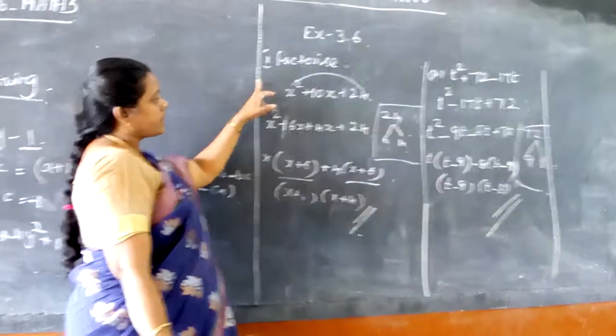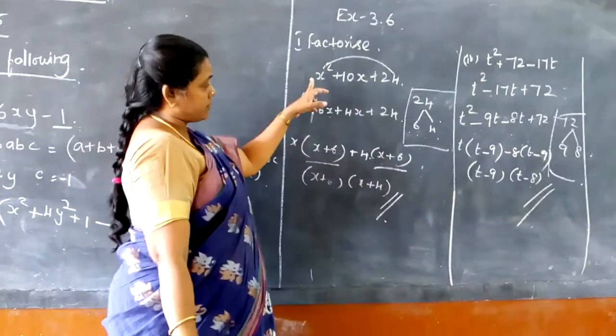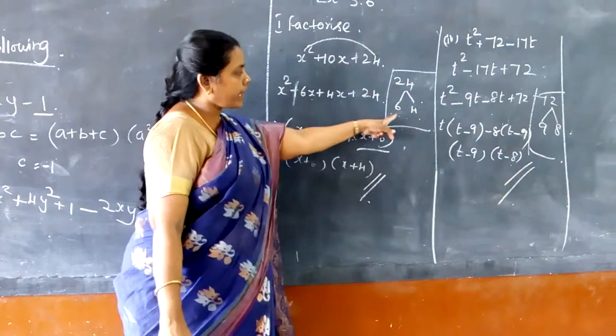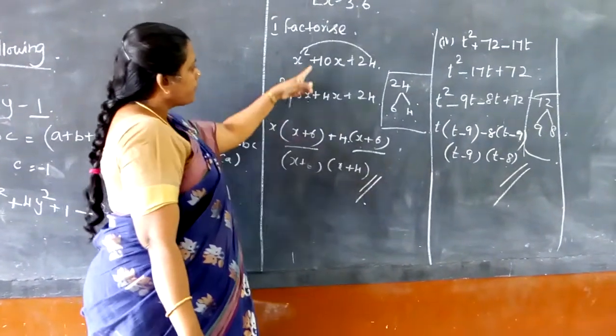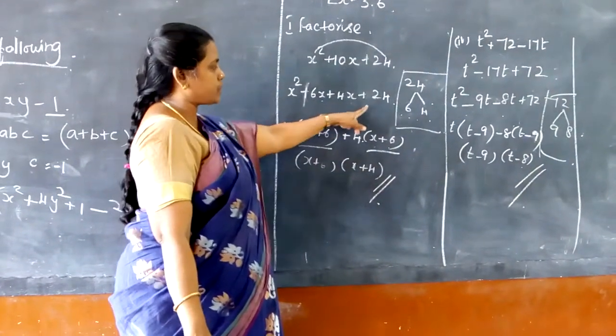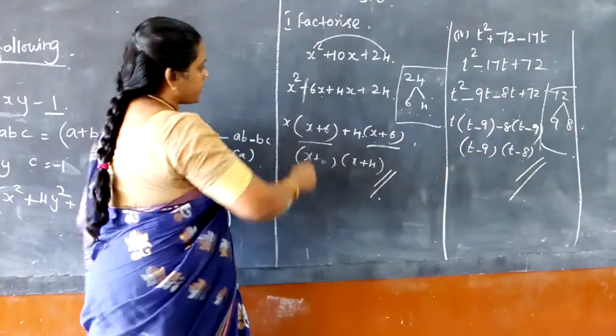Now the next is factorization. Let me explain: x² + 10x + 24. 24 can be factored with the numbers 6 and 4, so we can write x² + 10x as 6x + 4x + 24.